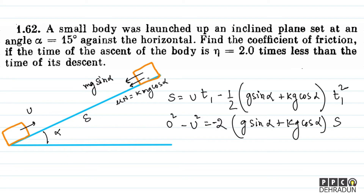Now, this acceleration applies while the body is in motion. Just as it reaches the topmost point, just one moment before it stops — I'm drawing a free body diagram here — at the very instant it stops, friction becomes zero because there is no relative slipping at that instant.